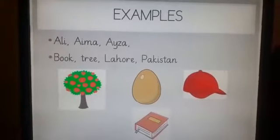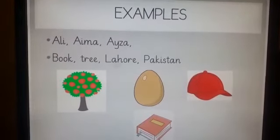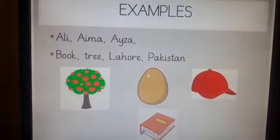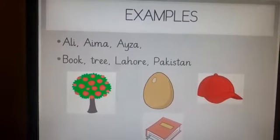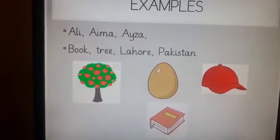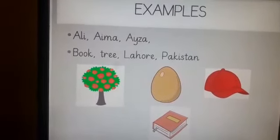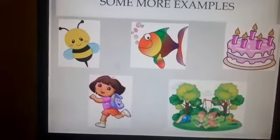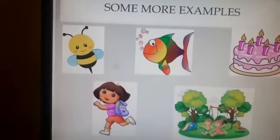Let's look at some examples. We have students — when we call their names, that is a noun. So Ali, Aima, Aiza are all nouns. When you name a thing like book or tree, that's also a noun. When you name a city or place like Lahore or Pakistan, that's also a noun. You can see pictures: tree, egg, cap, book, bee, fish, cake, Dora, and park — these are all nouns.